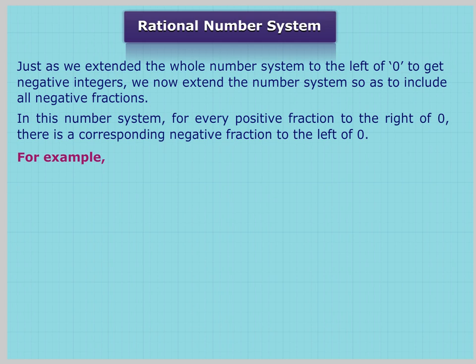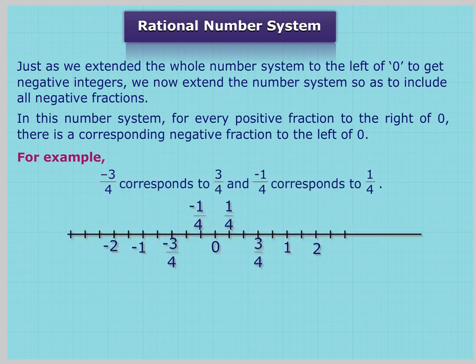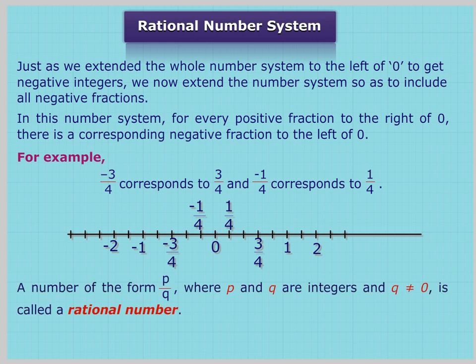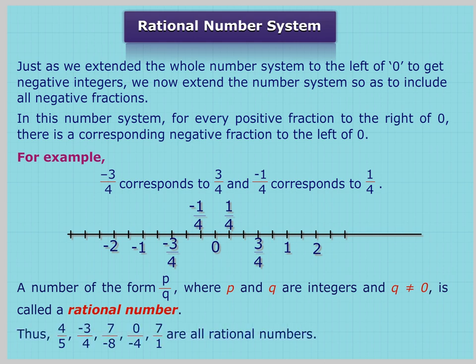For example, -3/4 corresponds to 3/4 and -1/4 corresponds to 1/4. A number of the form P/Q, where P and Q are integers and Q not equal to 0, is called a rational number.